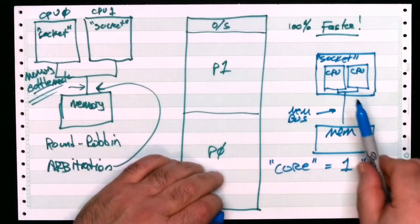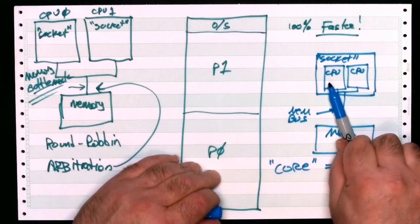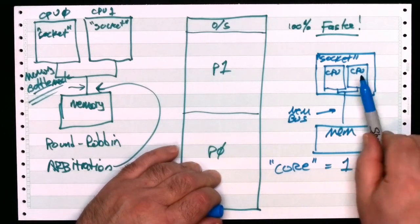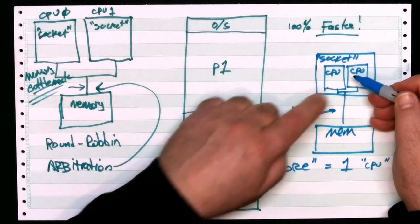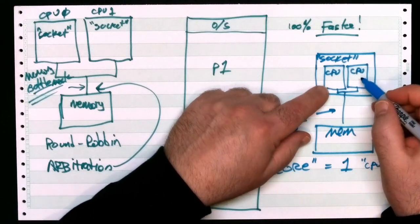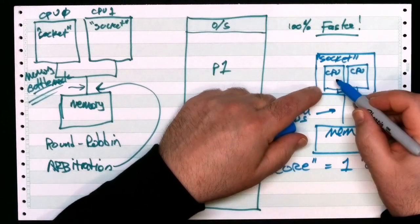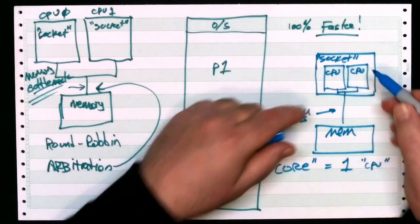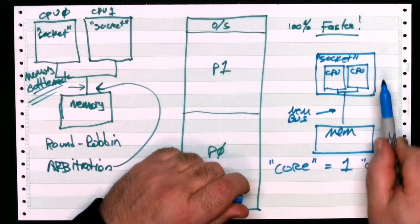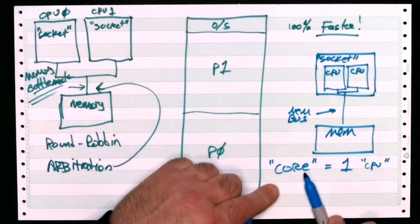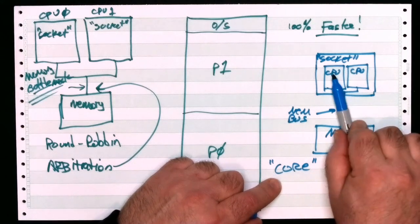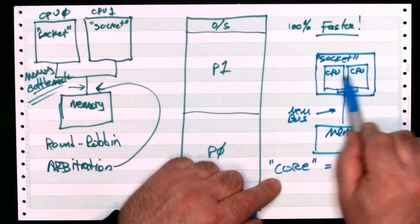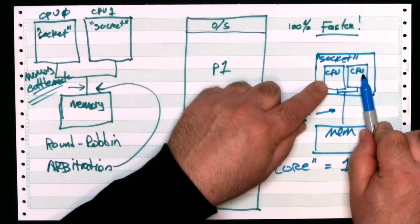Somewhere along the way, somebody decided that these two CPUs inside the socket were going to be called cores. So this is really what a core is. Today, one core still pretty much means what used to be one whole CPU, though today many people refer to the entire socket as a CPU - a word that had very specific meaning 40 years ago but now gets used in all kinds of random ways.